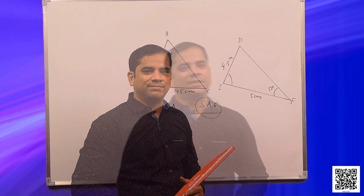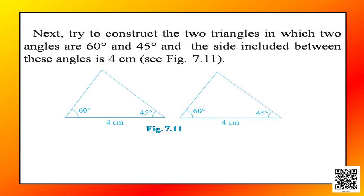Now let us discuss another concept of congruency. As your book says, try to construct two triangles in which two angles are 60 degrees and 45 degrees and the side included between these angles is 4 cm. What does it mean by included side? Included side is the side which is a common arm of two different angles.